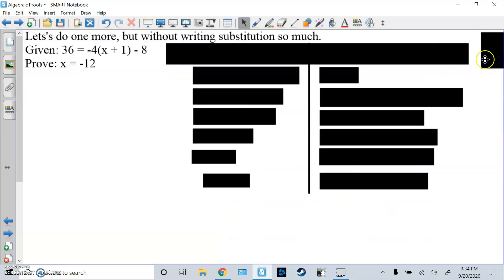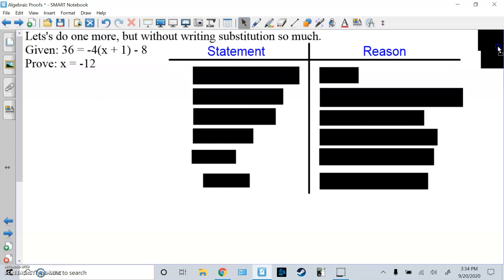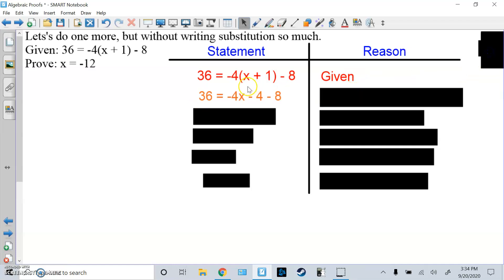Given 36 = -4(x + 1) - 8, prove x = -12. So again, we have our t-chart, statements on the left, reasons or justification on the right. And again, you can write S here and R here or J. So first I wrote the problem because it was given to me. Next I would distribute. So after I distribute -4 times X, -4 times 1 is -4. So that's the distributive property.